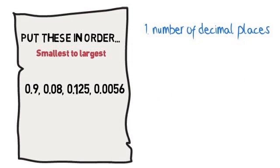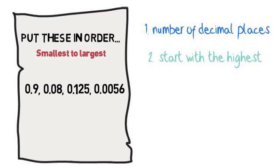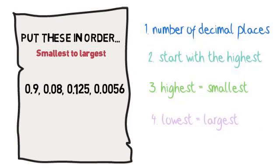There are a number of things to recognize at first. You would look at the number of decimal places, and start with the one with the highest number of decimal places. The highest number of decimal places would be the smallest. The lowest number of decimal places would be the largest.